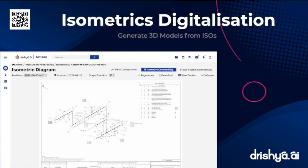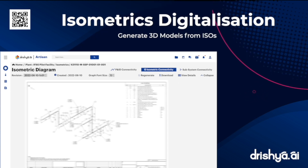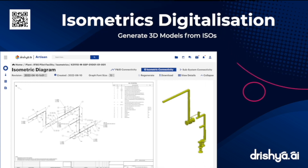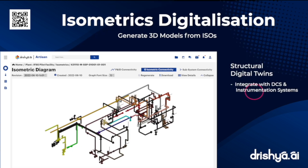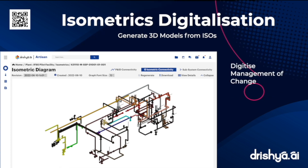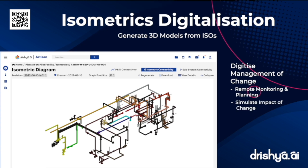Artisan analyzes isometric diagrams and correlates them with P&IDs to develop accurate 3D CAD models and structural digital twins, which can be integrated with data from instrumentation and DCS systems to baseline the entire facility for remote monitoring, planning, and simulation of impact of change — essentially digitizing the management of change process and decreasing fieldwork.